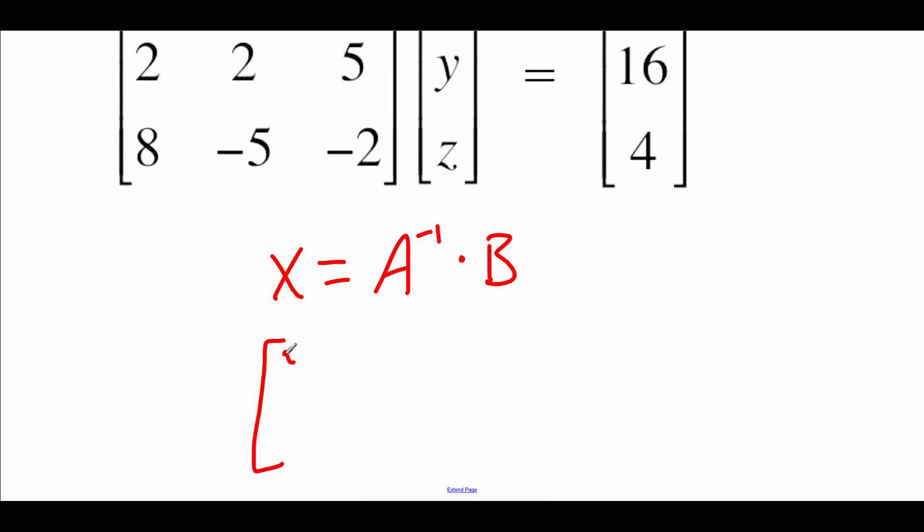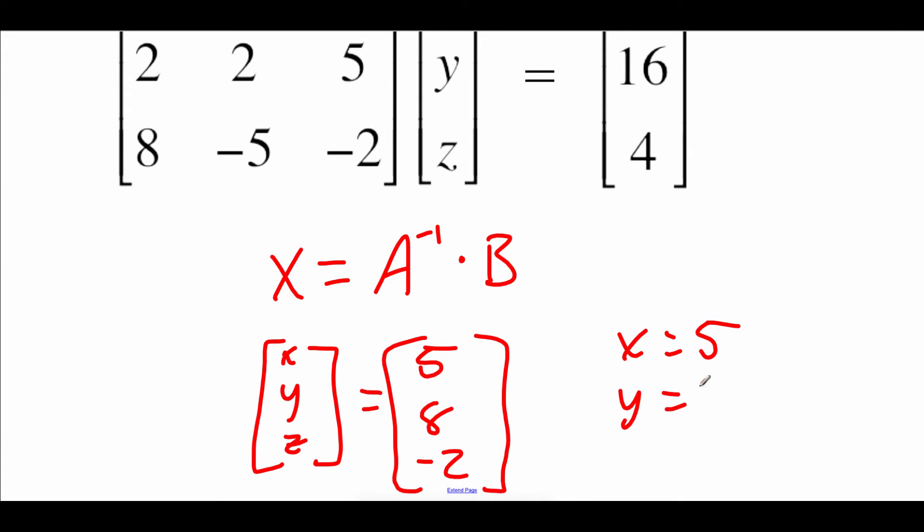So what this is saying is our matrix X, which was that X, Y, Z matrix, is equal to this new three by one matrix that we got, five, eight, negative two. So this is telling us the solutions to this system. Our X value is five, our Y value is eight, and our Z value is negative two.